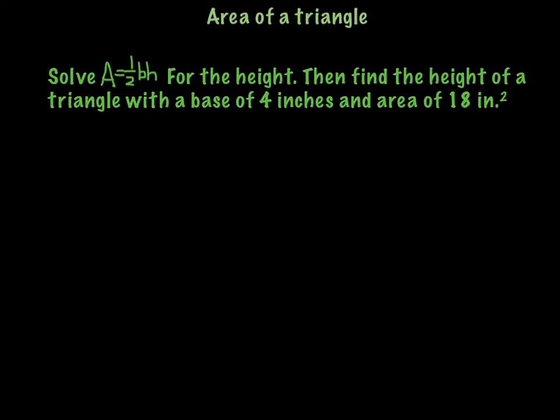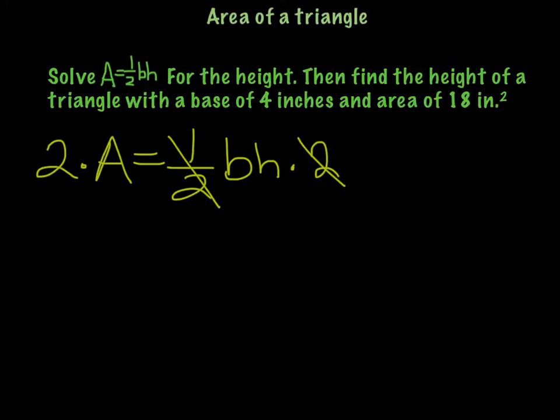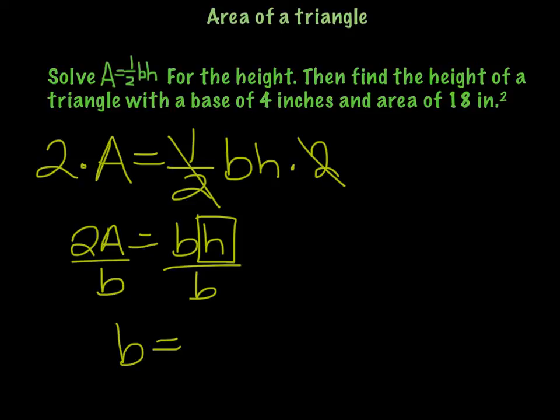And we are going to first take care of that one-half. So if I have A equals one-half bh, then to get rid of it, we're going to multiply both sides by 2. The multiplication property of equality says that you can do that because those will cancel out. So 2A equals bh. And since we're solving for the height, we want to get our h by itself. We need to undo this multiplication by dividing, and our h is equal to 2A over b.